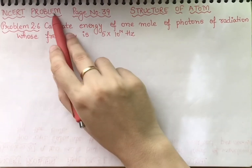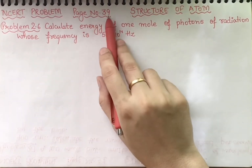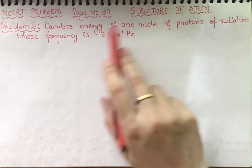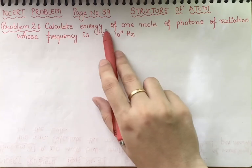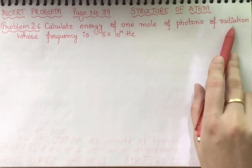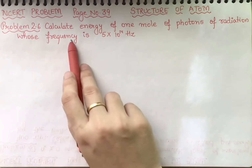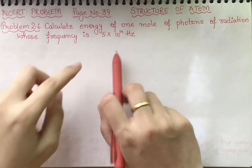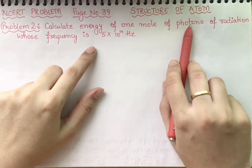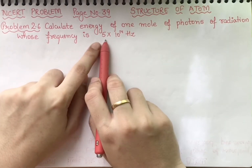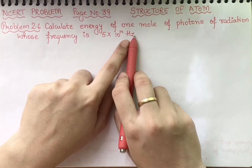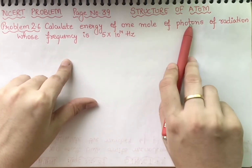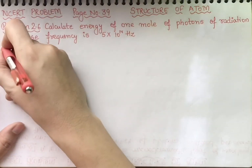This is NCERT problem 2.6 from page number 39 of Structure of Atom. The problem states: calculate the energy of one mole of photons of radiation whose frequency is 5×10¹⁴ Hz. We are given one mole of photons, each having frequency 5×10¹⁴ Hz, and we need to find the total energy of one mole of photons.